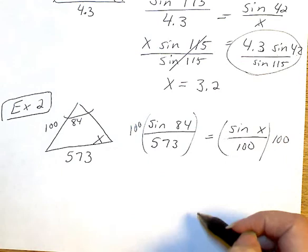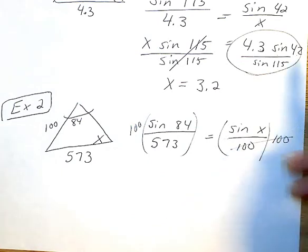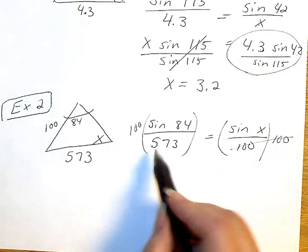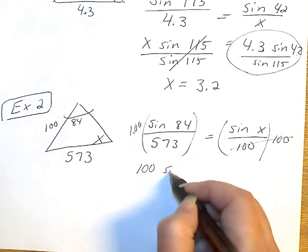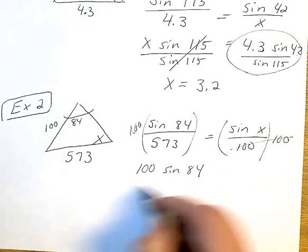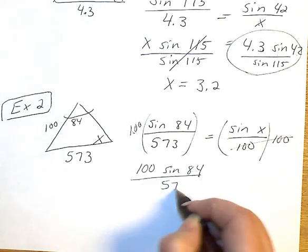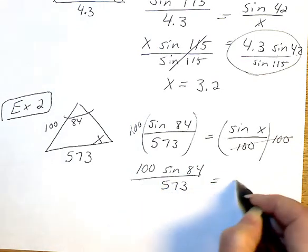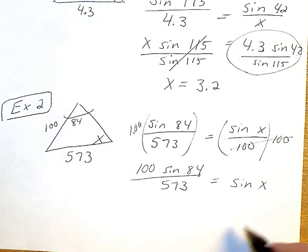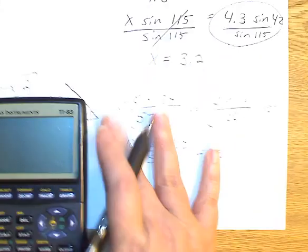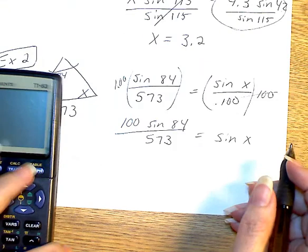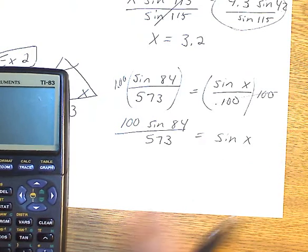So my 100s cancel out, just like above when we were multiplying. So it's really only multiplying this side by it. So I have 100 sine of 84 over 573 is equal to sine X.